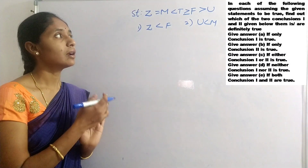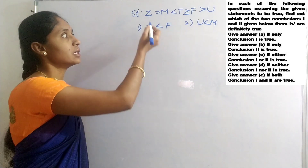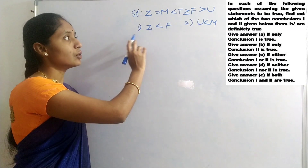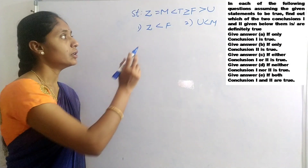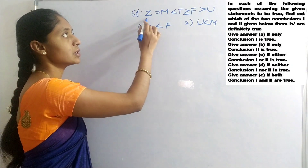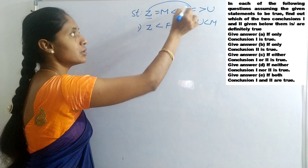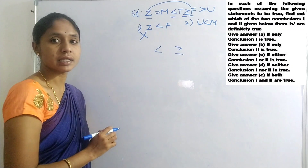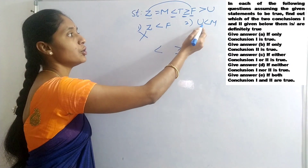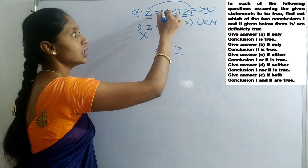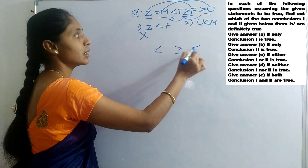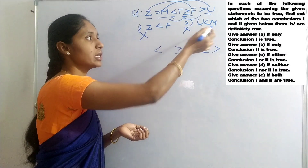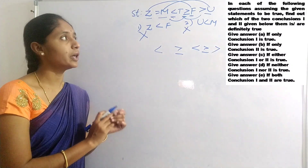Question 2: Z equals to M less than T greater than or equals to F greater than U. Conclusions: Z less than F; U less than M. For Z and F, the signs in between are less than and greater than or equals to — opposite — so no relation. For U and M, the signs are also opposite. Neither conclusion 1 nor 2 is true.